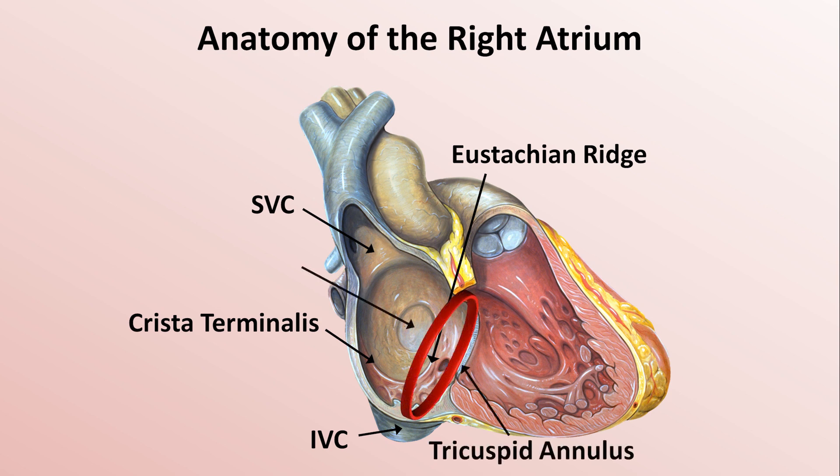This structure here is the fossa ovalis — the original location of the foramen ovale, which allows blood to travel from the right atrium to the left atrium during fetal development.